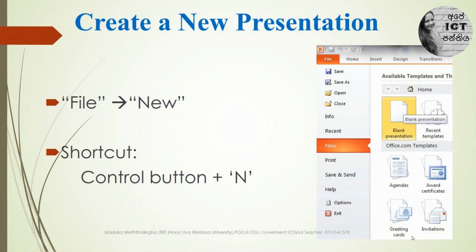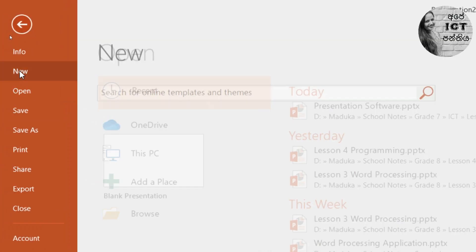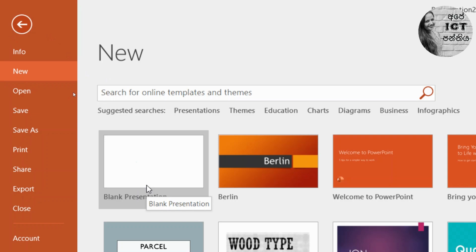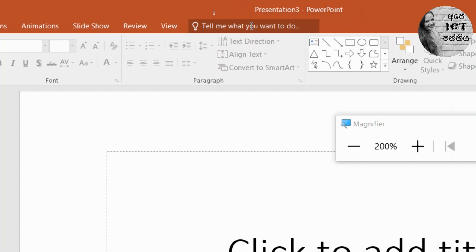Now I am going to show you how to create a new presentation. If you are already working with a presentation and want to create another one, you can use two ways. Go to File and click New. Alternatively, you can use the keyboard shortcut Ctrl+N. From here, select Blank Presentation.